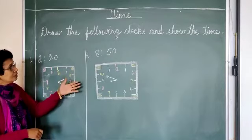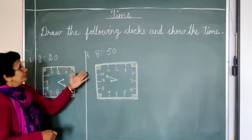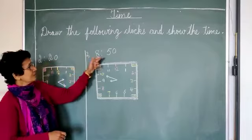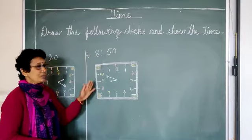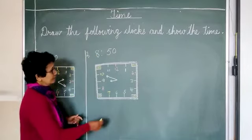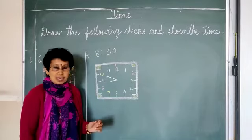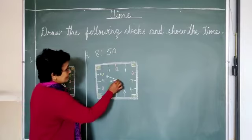Now, the second clock. For the second clock, the time is 8:50. So again, make a square. All the numbers should be divided properly, and your needles should not be dancing here and there. This is the center of the clock.